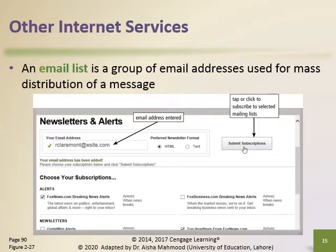An email list, or electronic mailing list, is a group of email addresses used for mass distribution of a message. When a message is sent to an email list, each person on the list receives a copy in his or her mailbox. You subscribe to an email list by adding your email address to the mailing list, which is stored on a list server. To remove your name, you need to unsubscribe from the mailing list. The original use of email lists such as Listserv allowed any subscriber to send a message, creating a discussion-type forum among all subscribers. Many mailing lists today are one-way communications and do not allow subscribers to send messages.